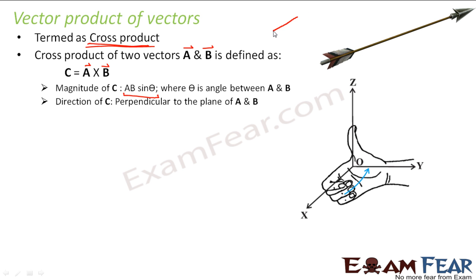If you have vector a and vector b with angle θ between them, then the magnitude of a cross b would be ab sinθ. As for direction — because direction plays a very significant role when talking of vectors — the direction of c will be such that c is perpendicular to a as well as perpendicular to b. So the direction of c is perpendicular to the plane of a and b.